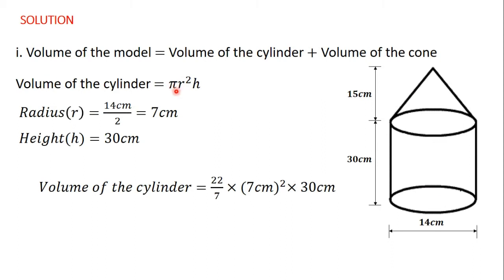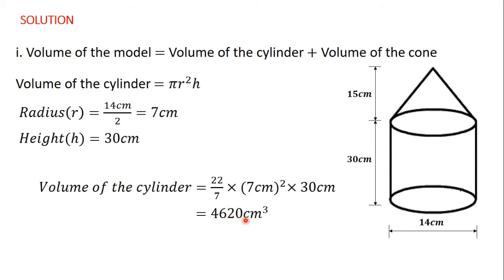So the volume of the cylinder equals pi r squared h. Taking pi as 22/7, we have (22/7) × 7² × 30. Calculating this gives 4620 cubic centimeters. So the volume of the cylinder is 4620 cm³.